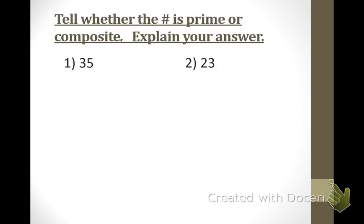The first topic is telling whether a number is prime or composite and explaining your answer. Carlos, number one is 35. What do you think? Composite. If you remember, composite means complicated — there are more factors other than one and itself. What's your reasoning? Five times seven. Five times seven — you are correct.